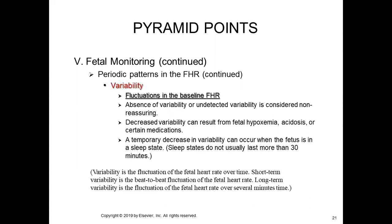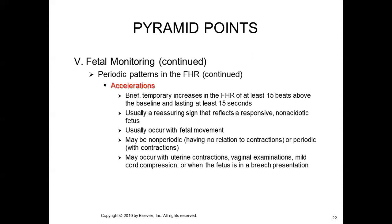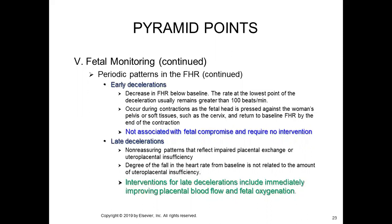In fetal monitoring, we can categorize variabilities by acceleration or deceleration. The normal fetal heart rate is 120 to 160 beats per minute. If it is not within this range — up or down — that is when we consider variabilities. Before understanding deceleration, it is important to understand what acceleration is, because that makes it easier to understand abnormalities or deceleration.